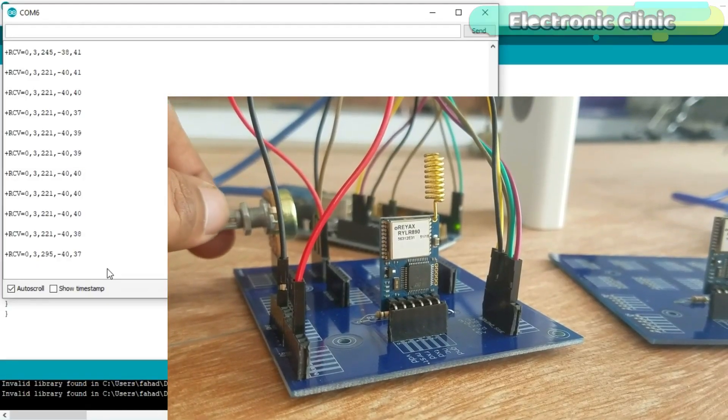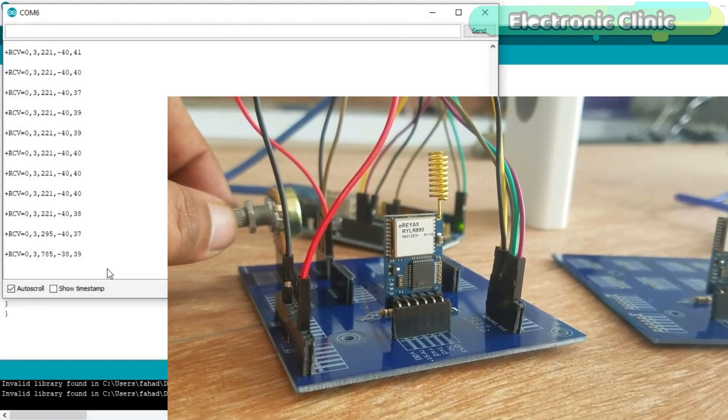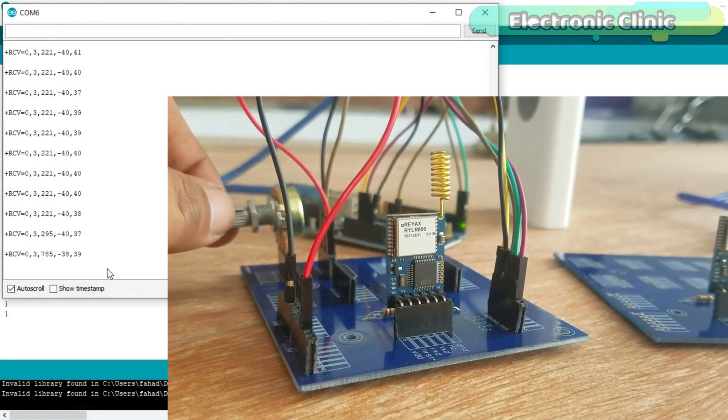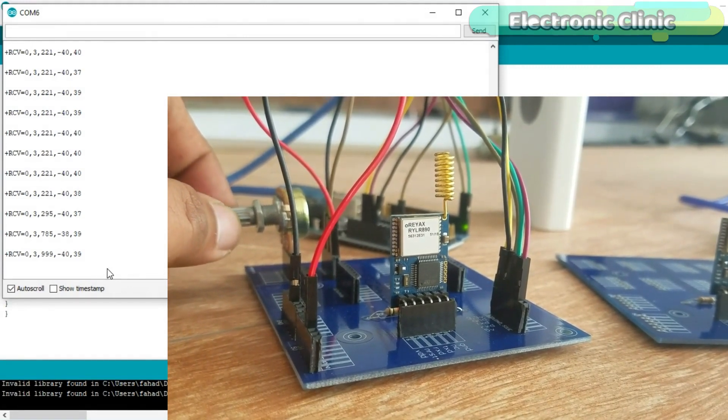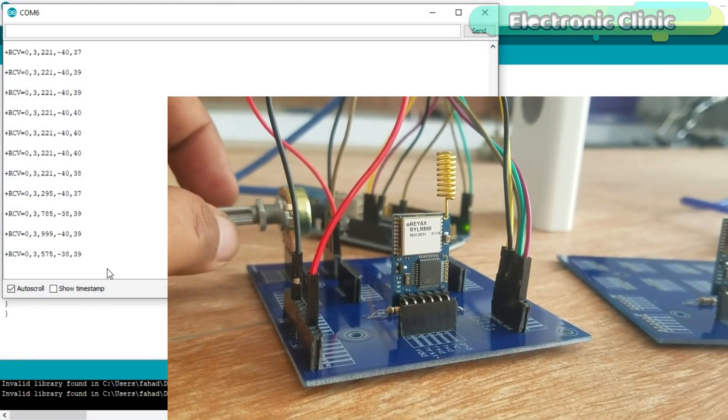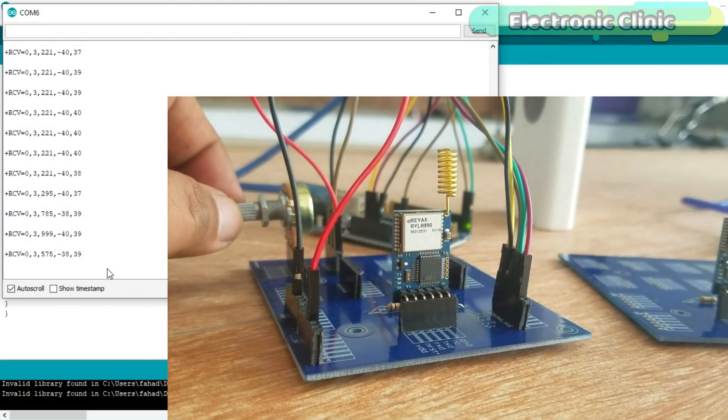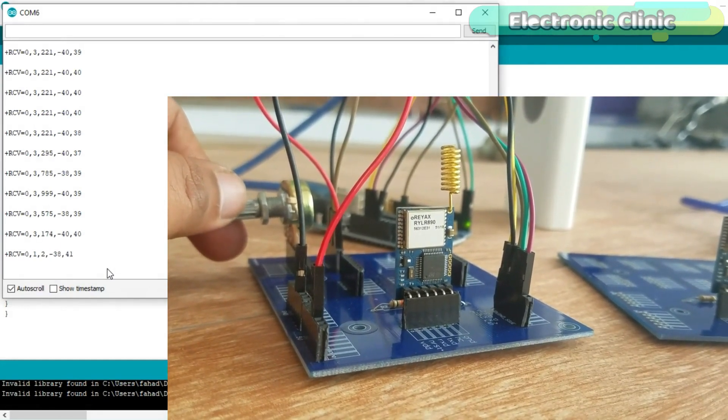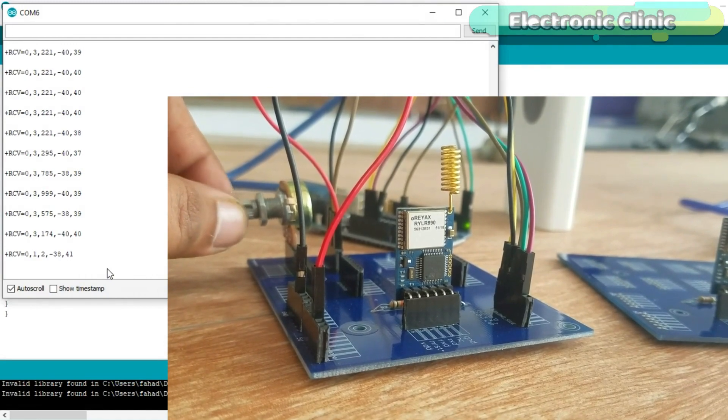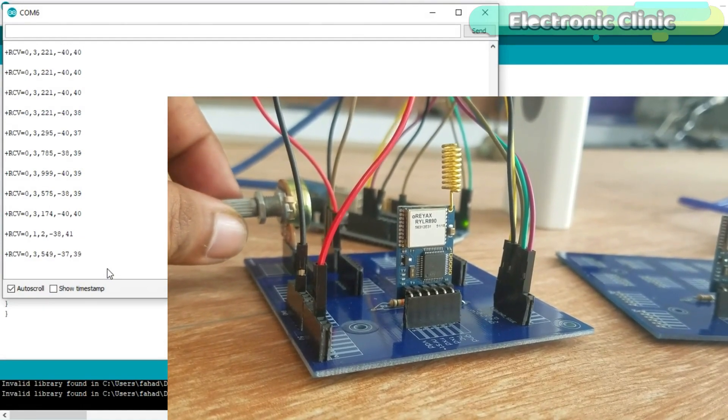This is my second tutorial on the REYAX RYLR890 or RYLR896 15-kilometer 915 MHz transceiver module. In this episode you will learn how to make a remote sensor monitoring system using REYAX RYLR890 based LoRa module and Arduino.